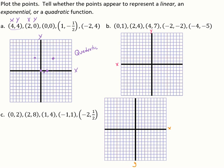For part b, we're going to be graphing the points (0, 1), (2, 4), (4, 7), (negative 2, negative 2), and (negative 4, negative 5). After graphing these, this definitely looks like a straight line. So we're going to say that this is a linear function.